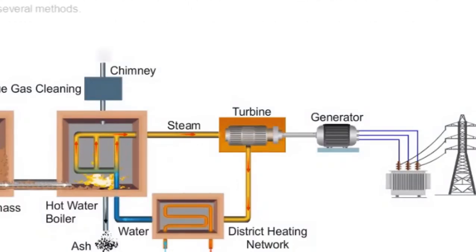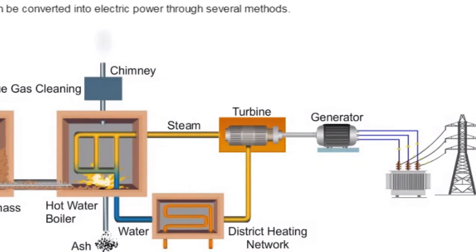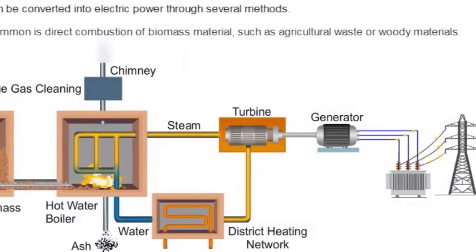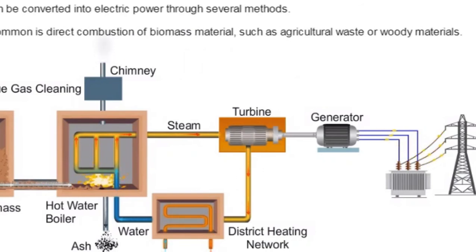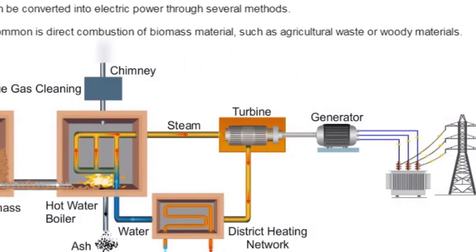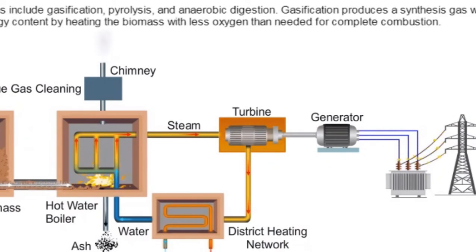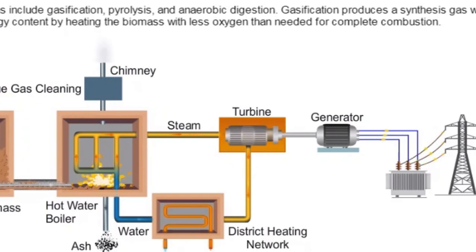Biomass can be converted into electric power through several methods. The most common is direct combustion of biomass materials such as agricultural waste or woody materials. Other options include gasification, pyrolysis, and anaerobic digestion.